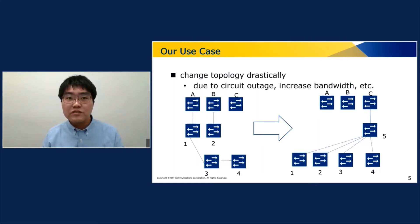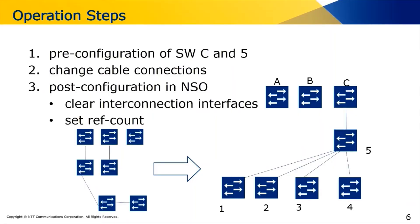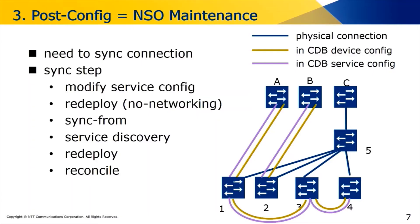There are three operation steps in this work. The first step is insertion of switch C and switch 5, done before changing physical connections. The second step is changing cable connections. The third step is configuration of NSO. In this step, they set physical connections correctly and performed three operations to set the ref count to the correct value.